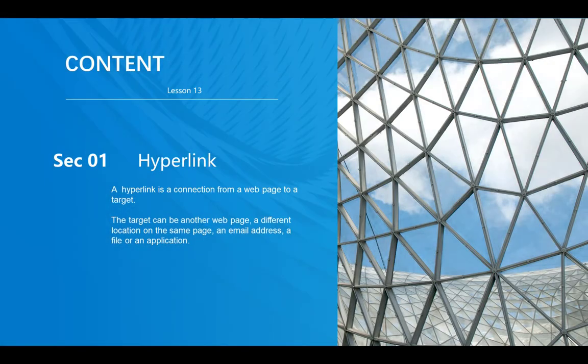Hello everyone, welcome to FireReport tutorial lesson 13 on Hyperlink. Hyperlink is one of the features that we use a lot on FireReport. Basically, a hyperlink is a connection from a web page to another target. The target could be another web page, the same page in a different location, an email address, or a file.